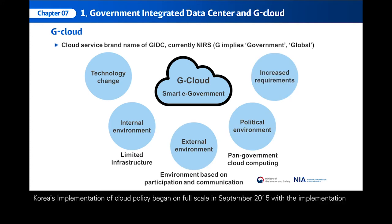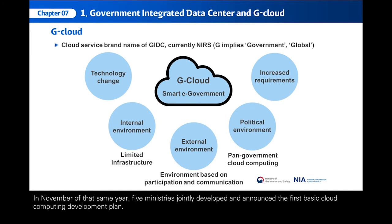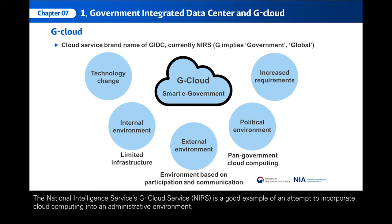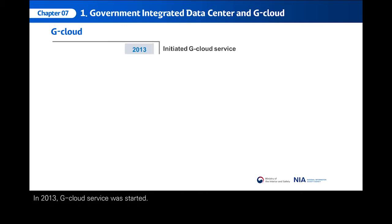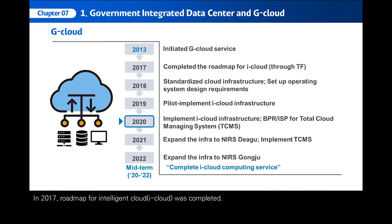Korea's implementation of cloud policy began on full scale in September 2015 with the implementation of the world's first Cloud Computing Development and User Protection Act, the Cloud Computing Act in short. In November of that same year, five ministries jointly developed and announced the first Basic Cloud Computing Development Plan. The National Intelligence Services G-Cloud Service (NIRS) is a good example of incorporating cloud computing into an administrative environment. G-Cloud Service was started in 2013. In 2017, the Roadmap for Intelligent Cloud (iCloud) was completed, and the government will complete iCloud Computing Service by 2022.